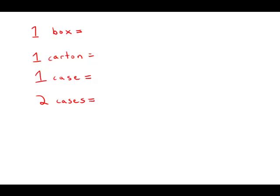This is an example of a question with variables in the answer type. We're told that each case contains C cartons, so C is the number of cartons in each case. If we have two cases, then we just have twice that amount, two C cartons.